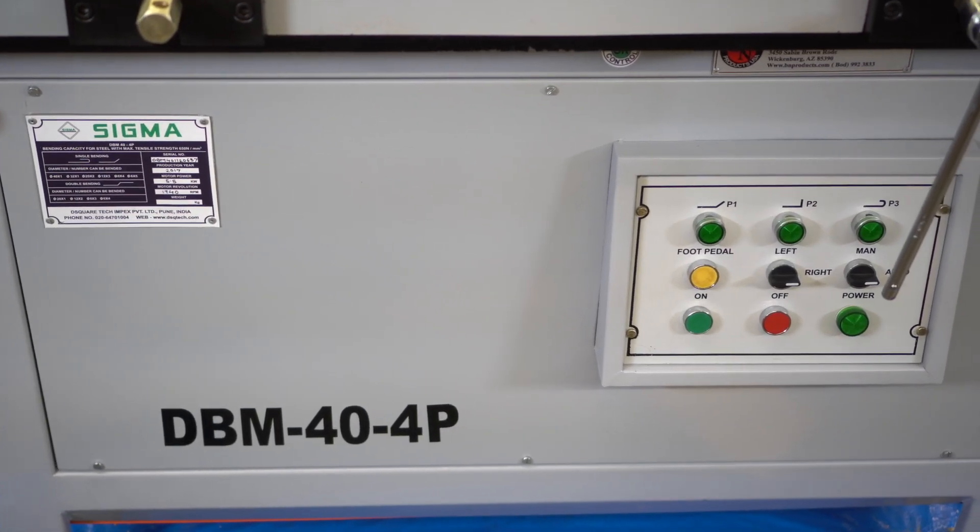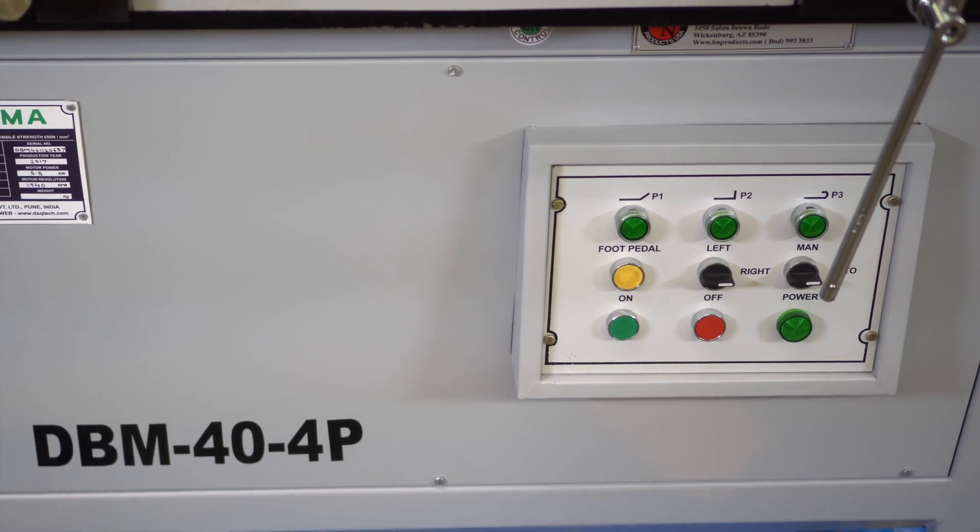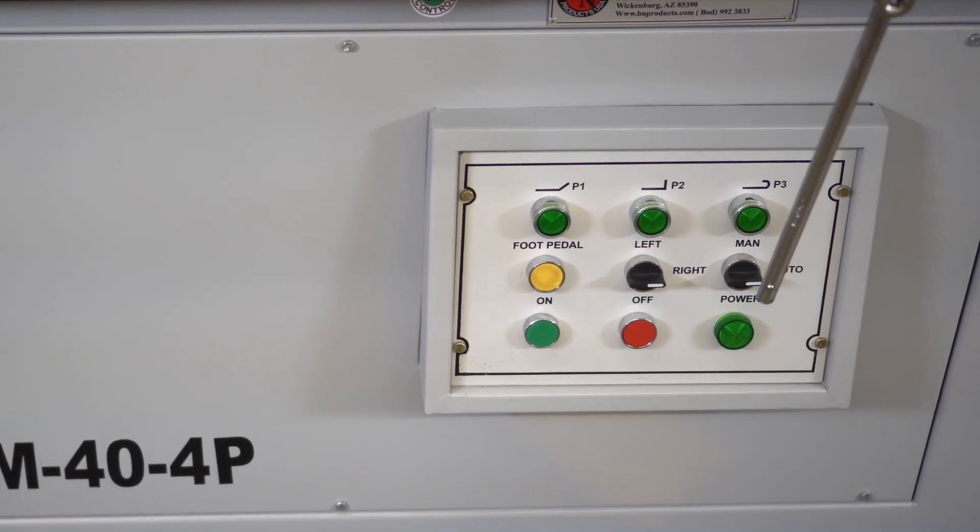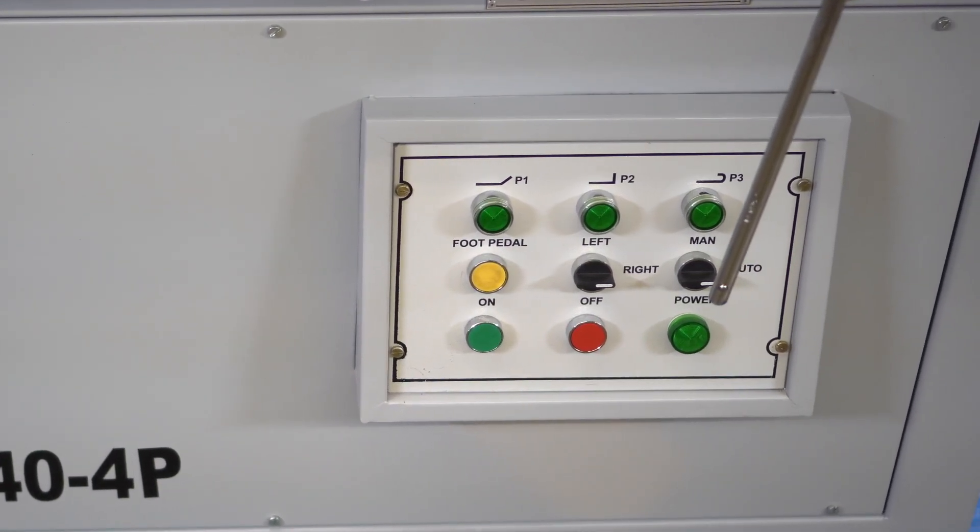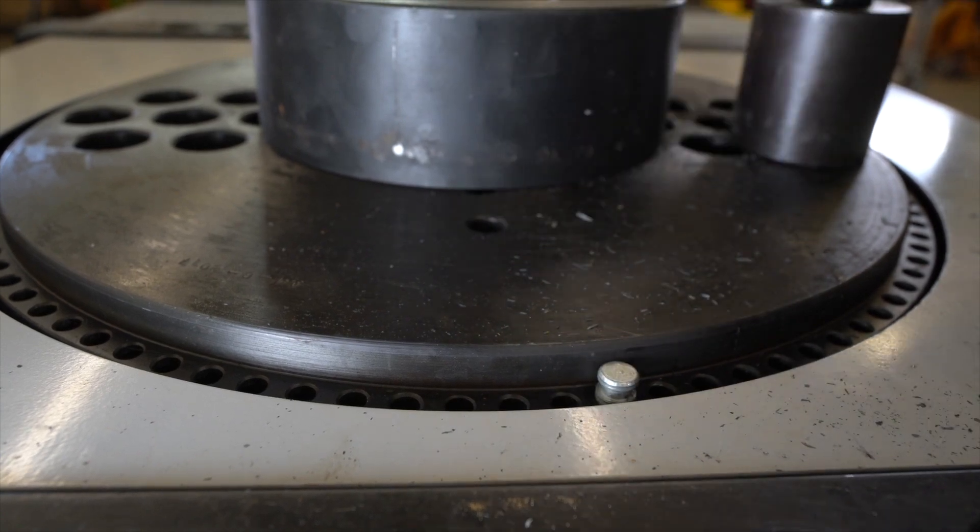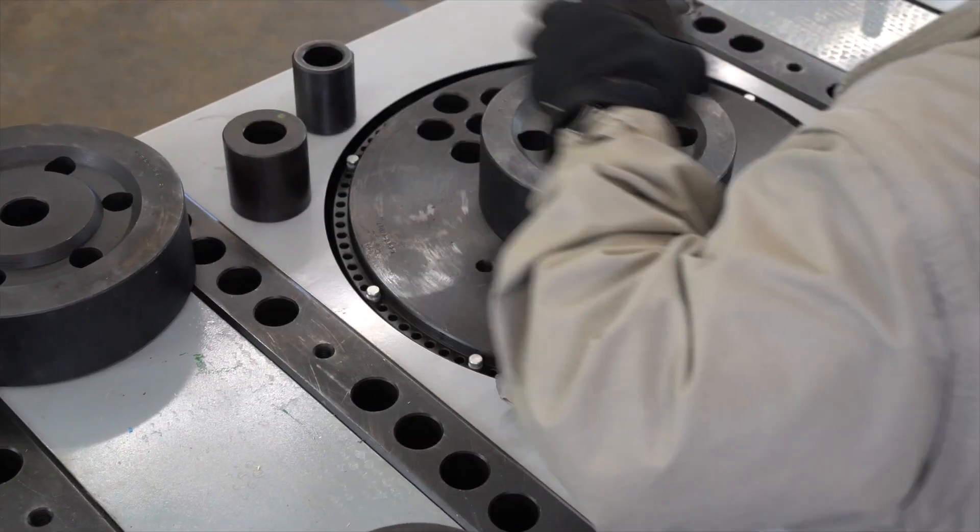P1 will stop at the first pin, P2 at the second pin, and P3 will stop at the third pin. And you can adjust the pins and rollers to get the exact bend you need.